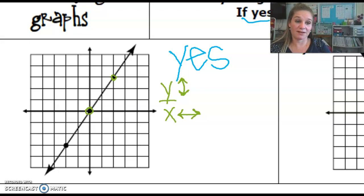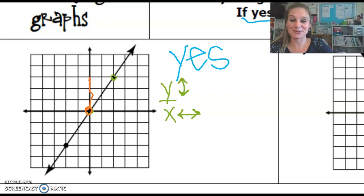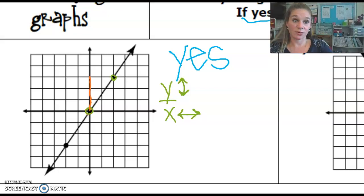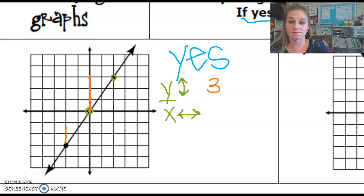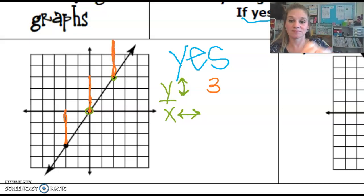To go from this point, how many do we rise? I'm going to count these squares. To go from here we go up one, two, three. So my change in y is three. From each point we're going to be going up three each time. That's what that number means. And then we have to look at the change in our x value.